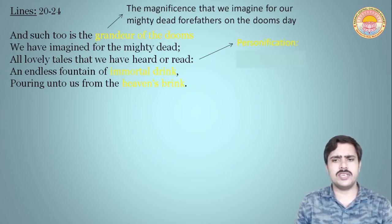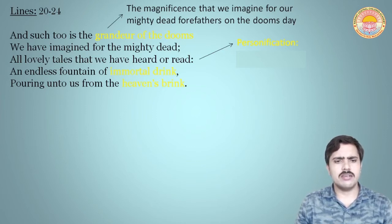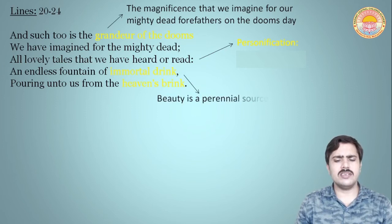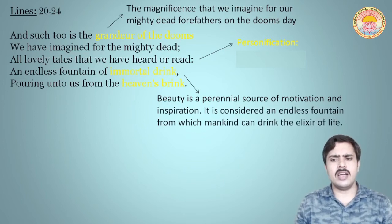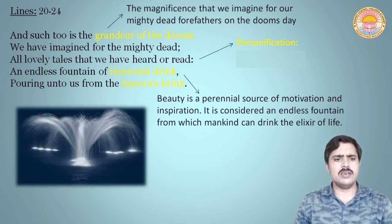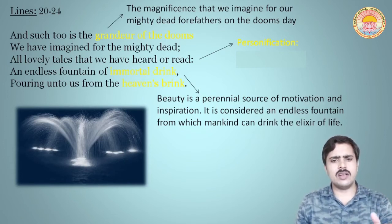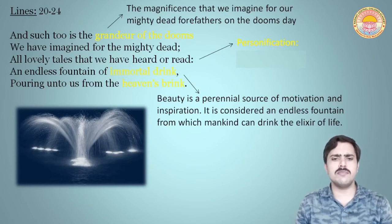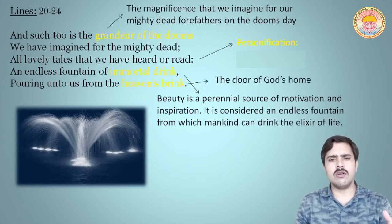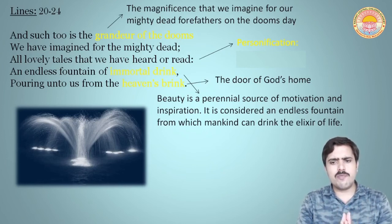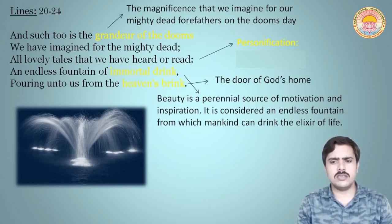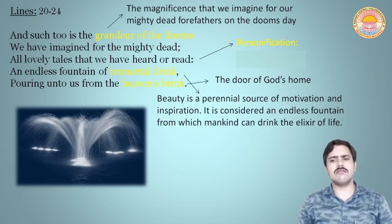This shows personification. An endless fountain of immortal drink — 'immortal drink' means beauty is the perennial source of motivation and inspiration. It is considered an endless fountain from which mankind can draw the elixir of life. In that fountain there is a symbol — 'an endless fountain of immortal drink pouring unto us from the heaven's brink.' Heaven's brink means the doors of God's home. From that, beauty as the pioneer source of motivation and inspiration — an endless fountain from which mankind can draw the elixir of life.